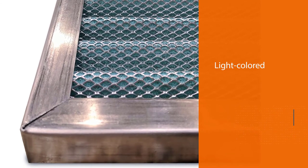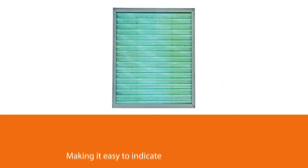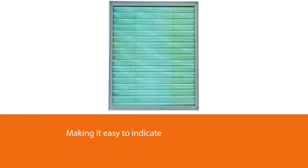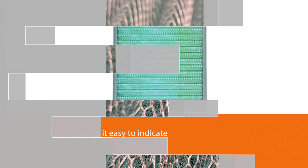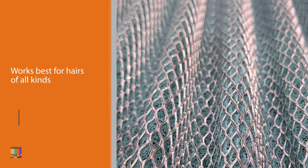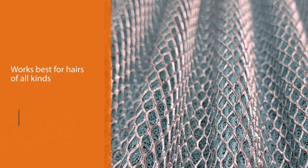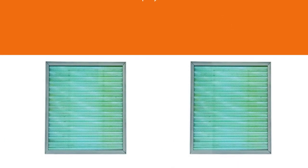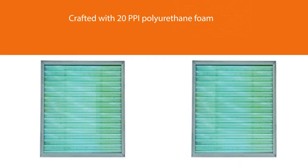It works best for hairs of all kinds, both human and pet. Each HVAC air filter is crafted with 20 ppi polyurethane foam between two pieces of corrugated aluminum for superior reliability. Each permanent air purifier slides into your HVAC system effortlessly in seconds, making it simple to change out your old filters.